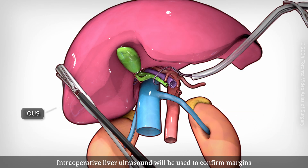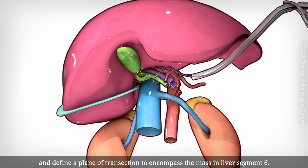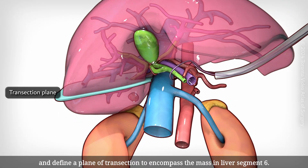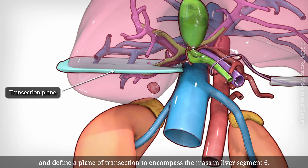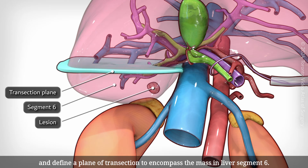Intraoperative liver ultrasound will be used to confirm margins and define a plane of transection to encompass the mass in liver segment 6.